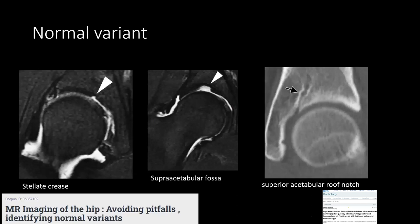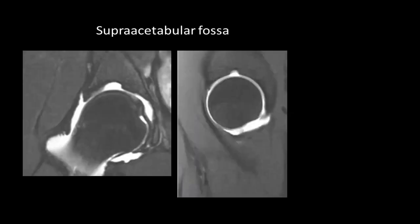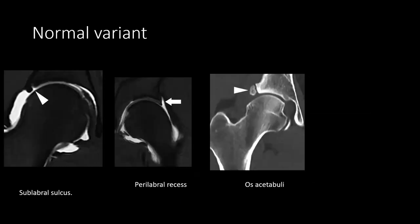Now let us talk about some normal variants. At the 12 o'clock position there is a contour defect that we call the suprastabular fossa. At 11 o'clock with a small defect, we call it stellate crease. And there's another variant where it goes quite deep with a sclerotic margin that we call the suprastabular roof notch. These are the normal variants we should know. There is also a small slit which is very sharp and not deep — less than 50 percent of the labral thickness — that we call the sublabral sulcus. And there is a collection of joint fluid lateral to the labrum and acetabulum that we call the perilabral recess. These are all normal variants.